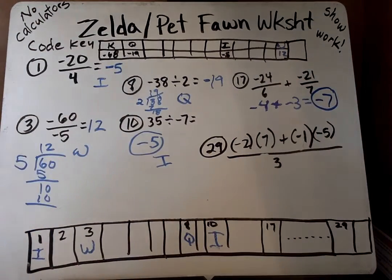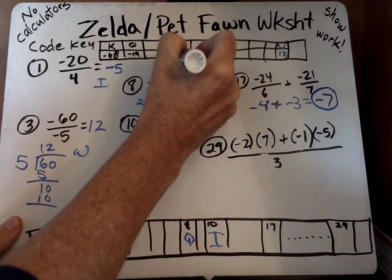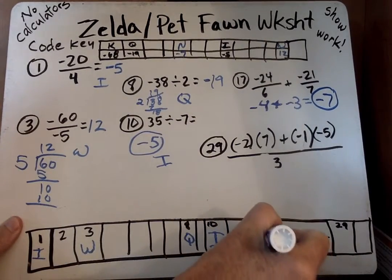We look at the chart, negative 7 is somewhere up here, and it's an n. So then we say 17 is an n.